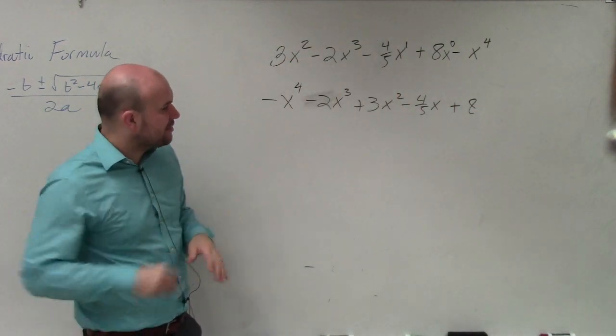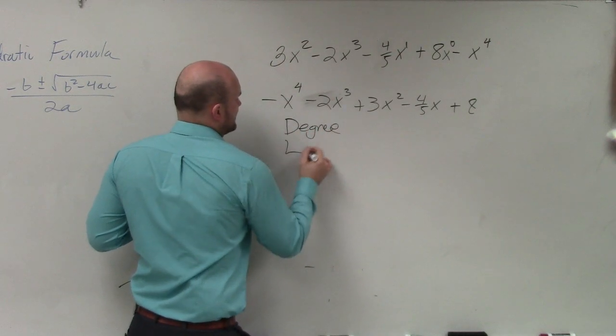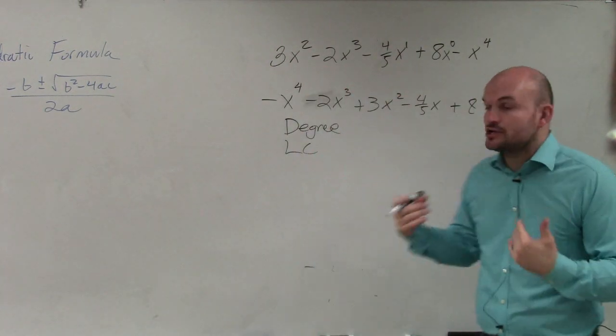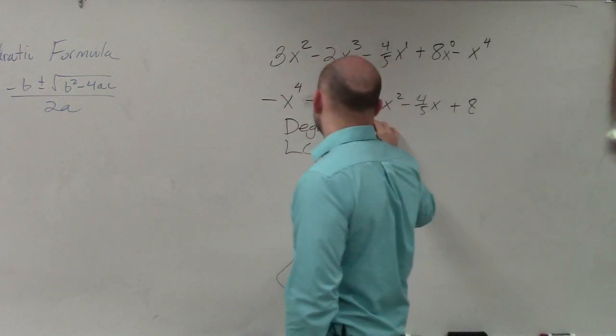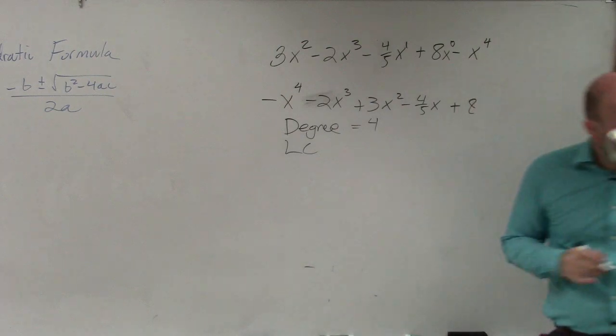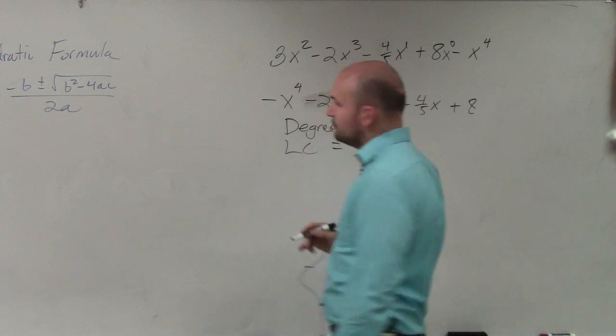So basically now that it's in descending order, we want to be able to identify the degree and the leading coefficient. Now the degree is going to be the power of that leading term, which in this case is 4. Where your leading coefficient is going to be the coefficient of the term, which is equal to negative 1.